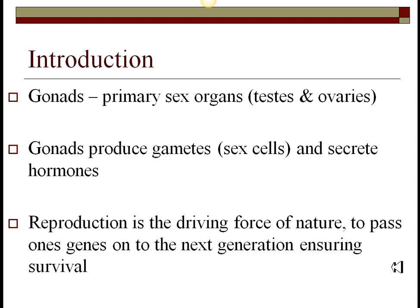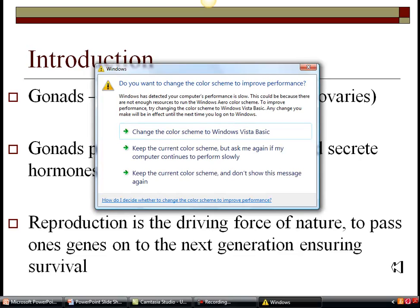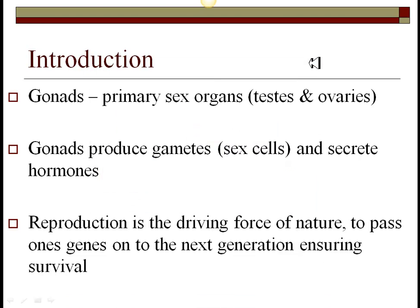There are some differences. Men produce four equal-size sperm from the process of meiosis, whereas women produce one very large egg and three polar bodies. When I say large, it's almost visible to the naked eye — it's about 2,000 times the size of a sperm.